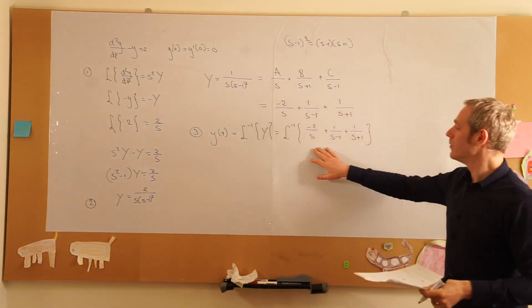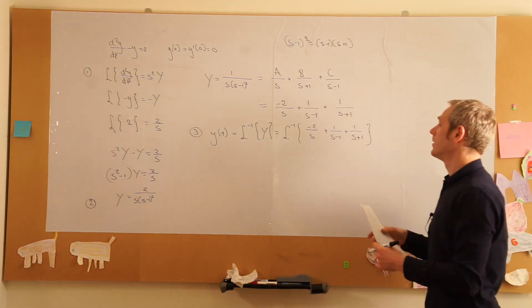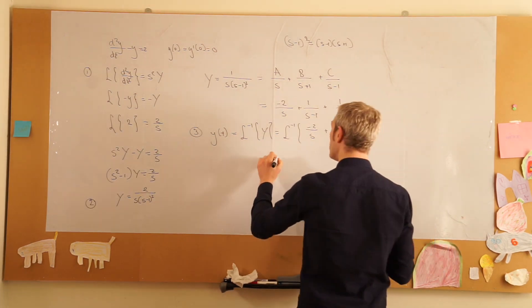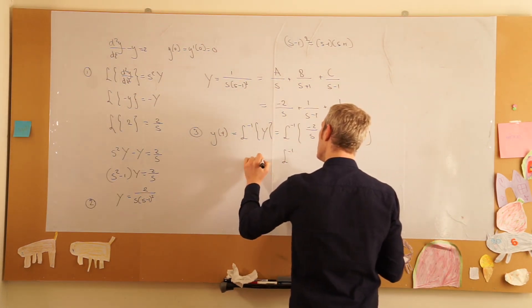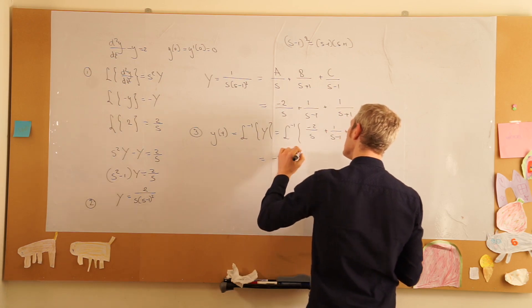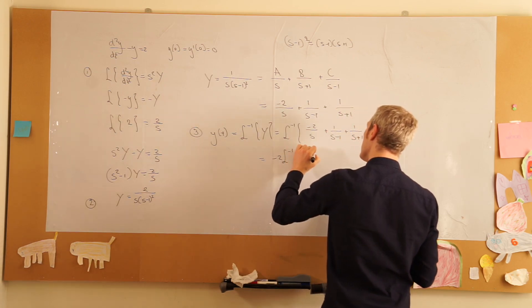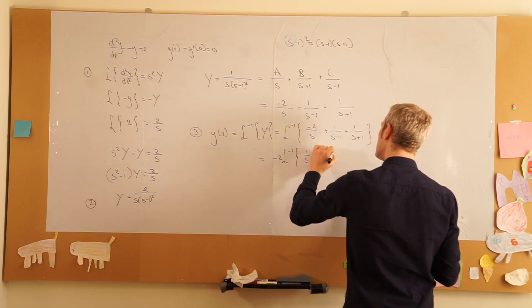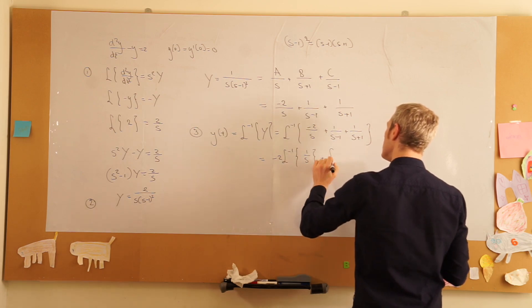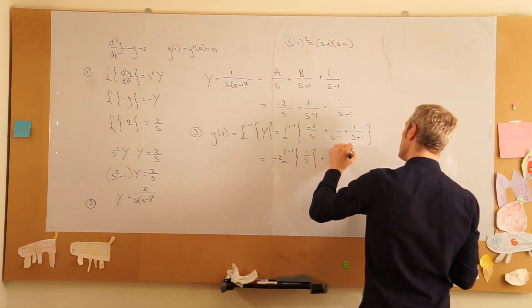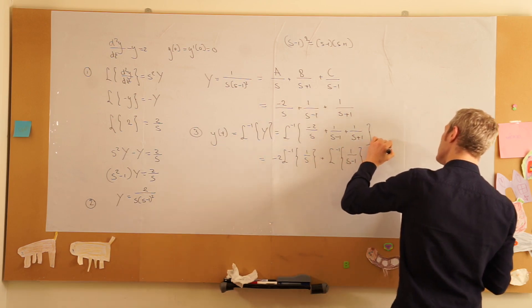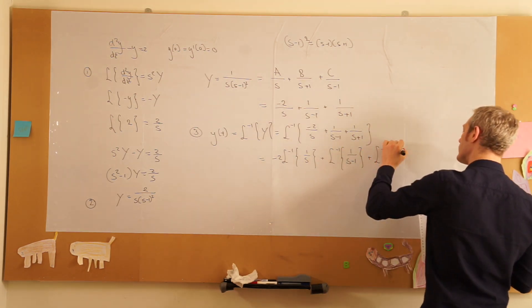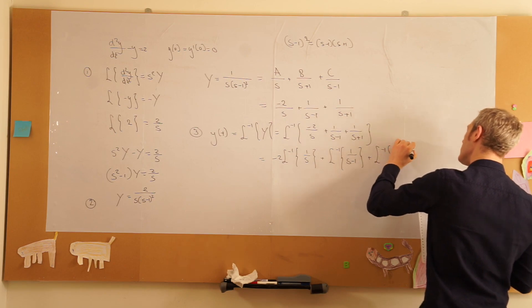Because the inverse Laplace transform is a linear operator, this is equal to minus 2 times the inverse Laplace transform of 1 over s plus the inverse Laplace transform of 1 over (s minus 1) plus the inverse Laplace transform of 1 over (s plus 1).